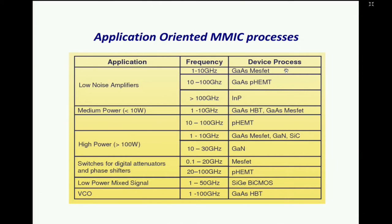For application-oriented MMIC device choices: low-noise amplifiers up to 10 GHz can use a MESFET, but nowadays a HEMT is the ubiquitous choice up to 100 GHz, and beyond 100 GHz it is an indium phosphide HEMT. Medium power can still use gallium arsenide, while higher power at higher frequency is gallium nitride. Around 30 GHz is the limit for commercially available gallium nitride processes, as the gain of GaN HEMT is pretty low at least in what is commercially available.